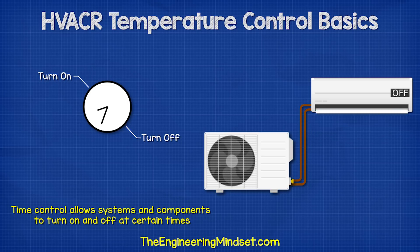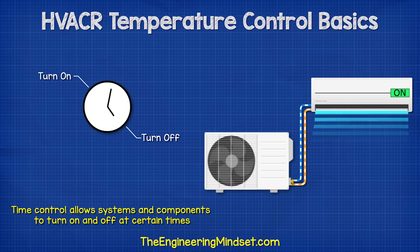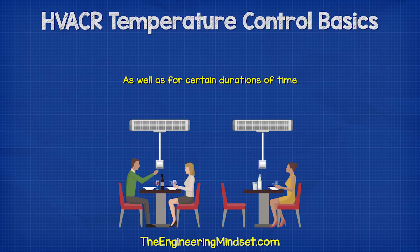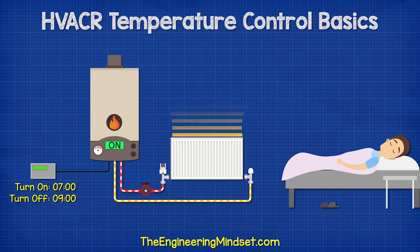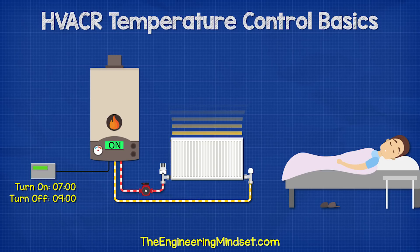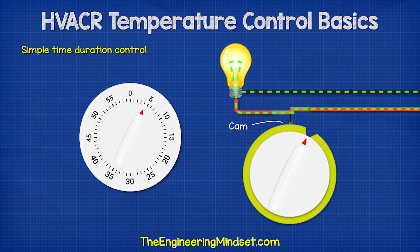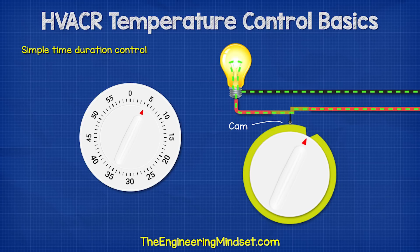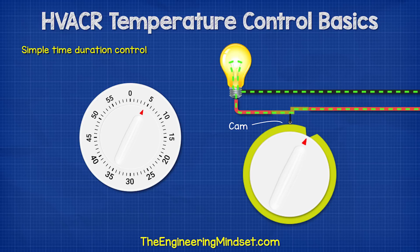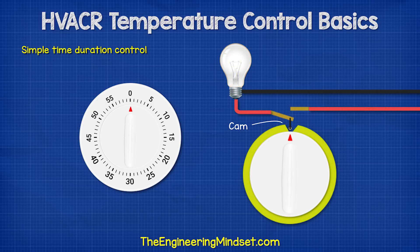Time control allows systems and components to turn on and off at certain times, as well as for certain durations of time, or we can delay something turning on or off for a certain amount of time. For example, on a cold morning, we want the heating to turn on before we wake up so that the house is nice and warm. A simple time control uses a cam to push contacts together and complete a circuit. As the time dial rotates, it will force the cam to open and close the contacts to turn the heating on and off.